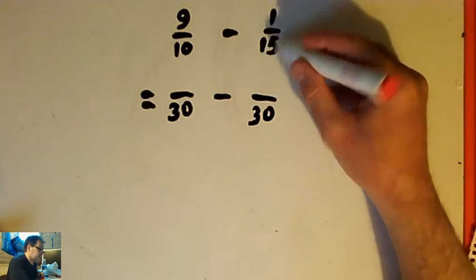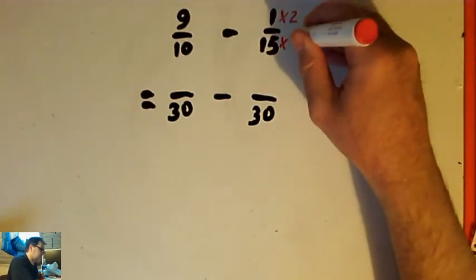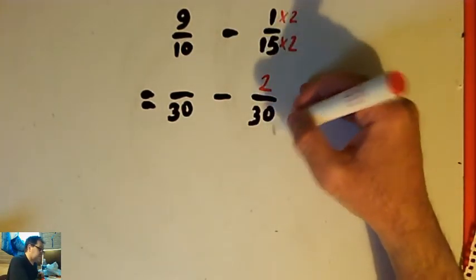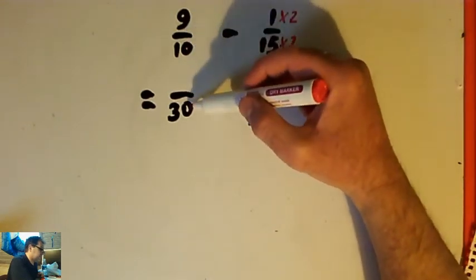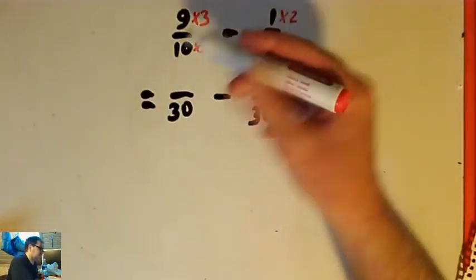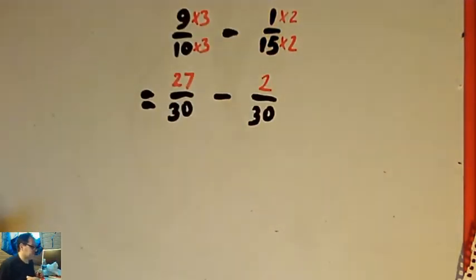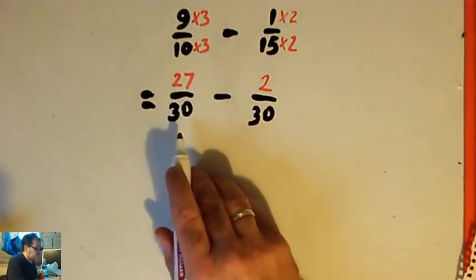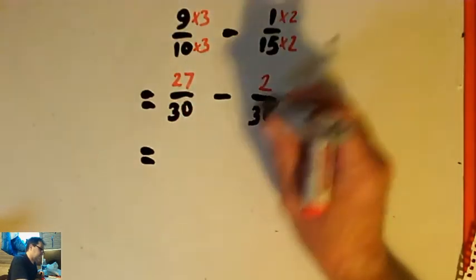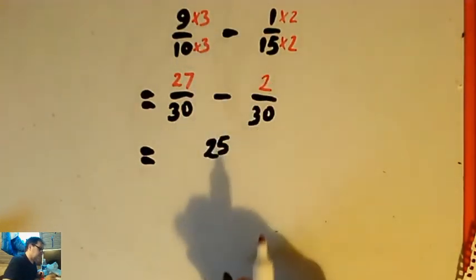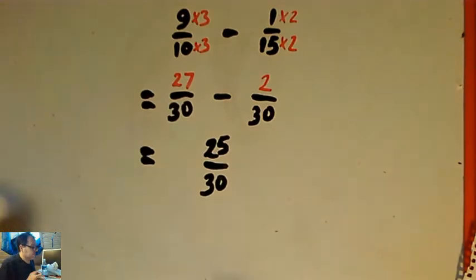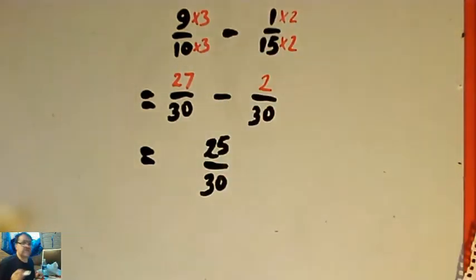For 1 fifteenth as a fraction out of 30, I need to multiply by 2 over 2. So 1 fifteenth is the same as 2 thirtieths. To get from tenths to thirtieths, I need to multiply by 3 over 3. So 9 tenths is the same as 27 thirtieths. Now I've got 27 thirtieths minus 2 thirtieths. Bearing in mind it's a minus this time, 27 minus 2 is 25 on the top, and the 30 stays the same.